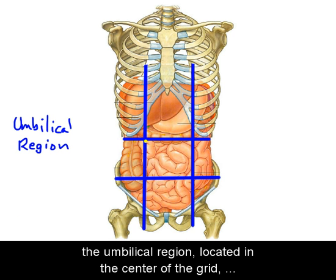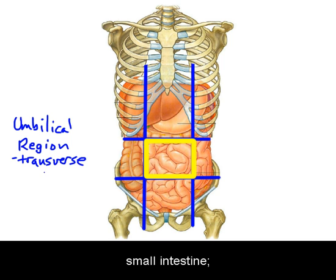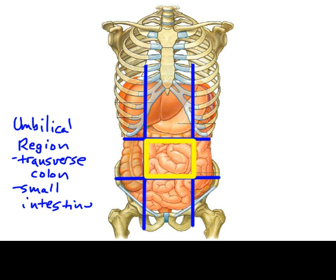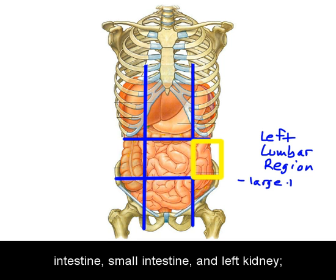The umbilical region, located in the center of the grid, contains both the transverse colon and the small intestine. The left lumbar region contains parts of the large intestine, small intestine, and left kidney.